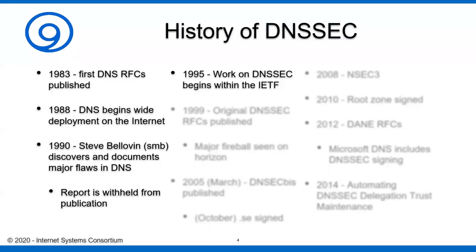In 1995, about five years later, the IETF began working on something called DNSSEC — DNS Security Extensions — and it took about four years for the original RFCs to be published. When those RFCs were published, operators looked at them and said this is absolutely impossible to deploy and will never be suitable for mass deployment. At that point, the major fireball of the failure of the initial release of DNSSEC was seen way aloft on the horizon.